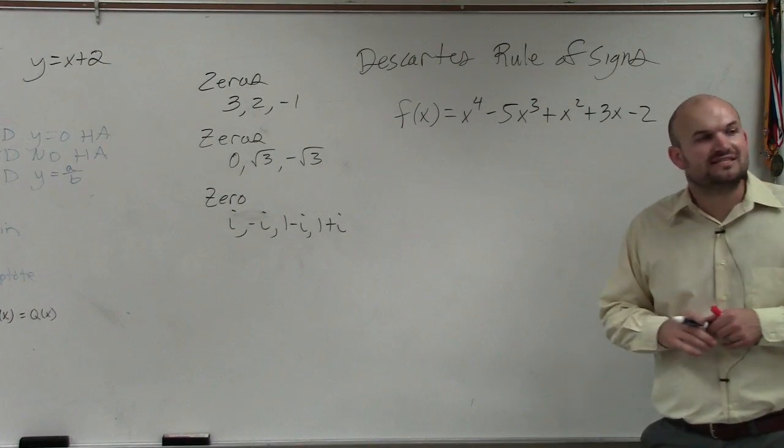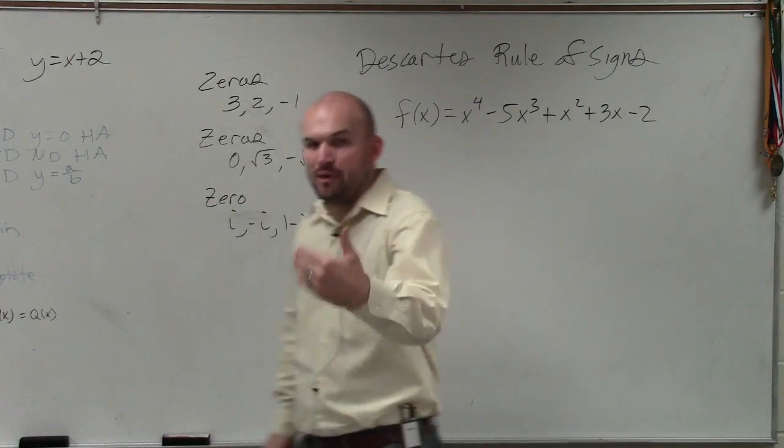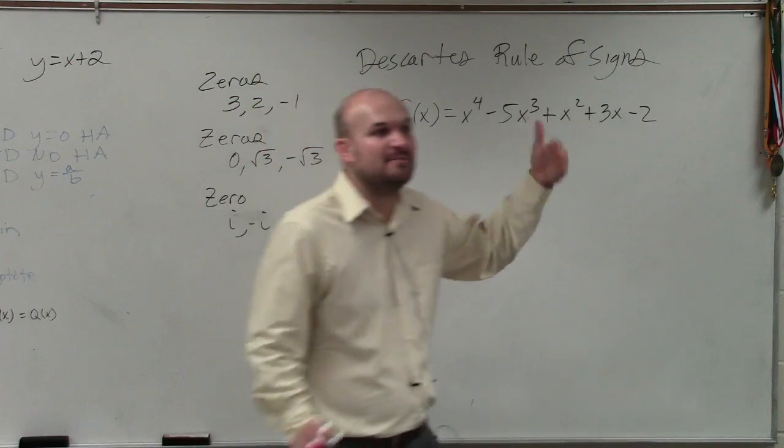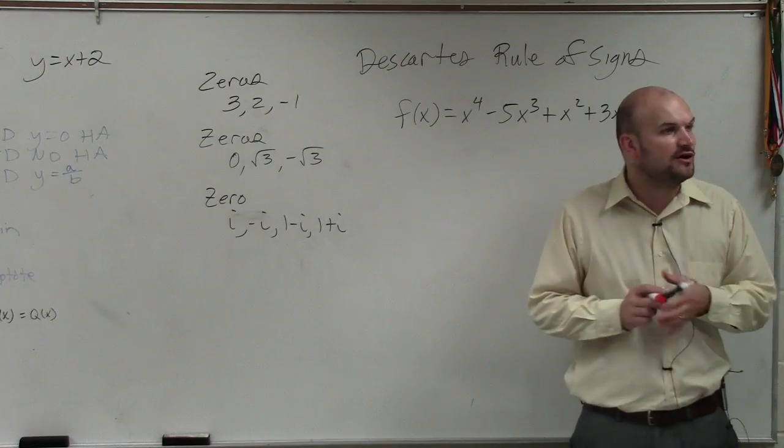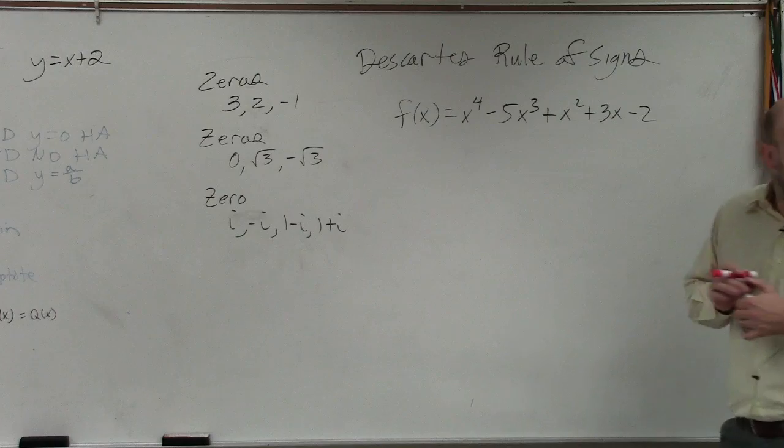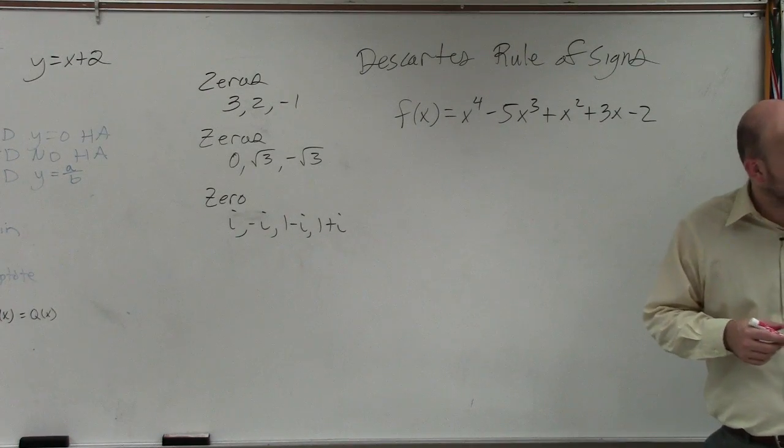So what Descartes' rule of signs says is based on the equations, we can determine how many real positive and how many real negative, and therefore how many complex zeros a function has without doing anything. So it's just a way from inspection. You guys can quickly - it's a good way to check your work.